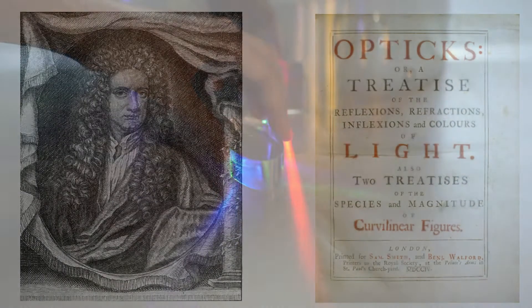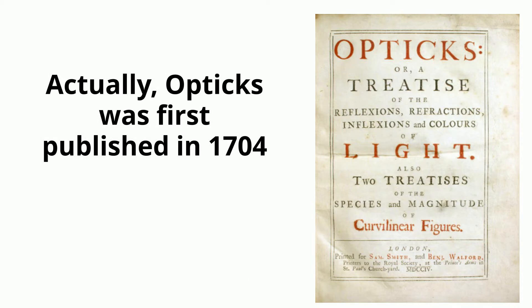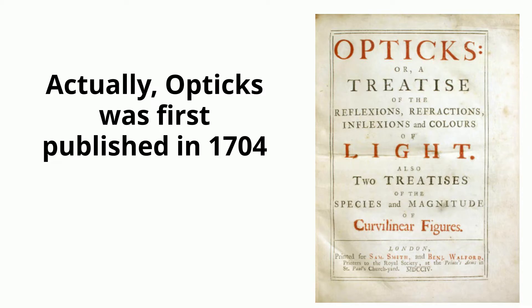Interesting science fact: Sir Isaac Newton described how white light is made up of different colors in 1671 in his book Optics. An easy way to remember the colors of visible light is to use the name ROYGBIV.